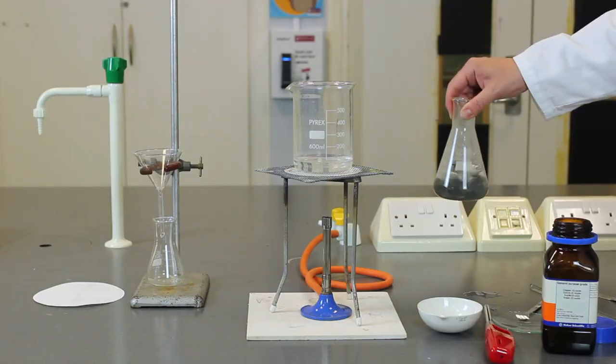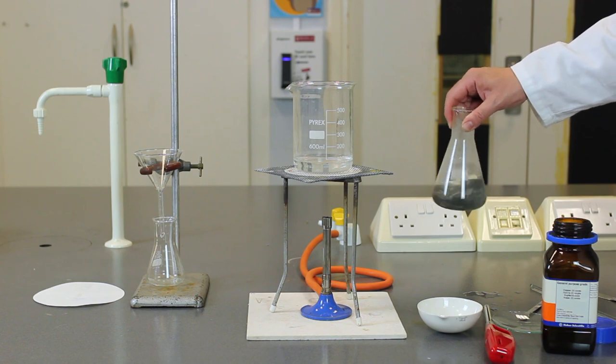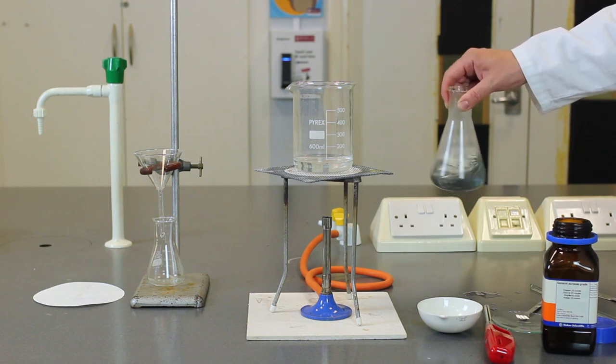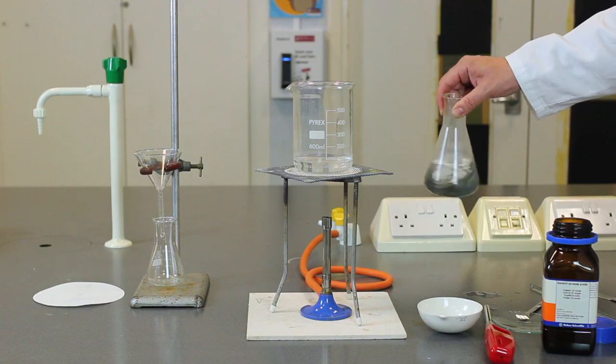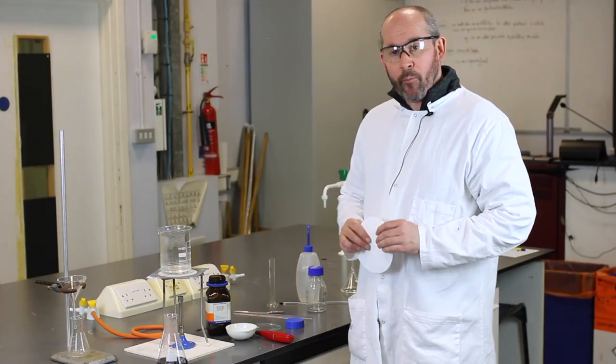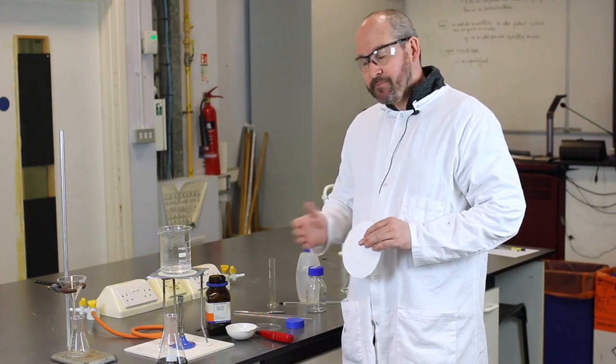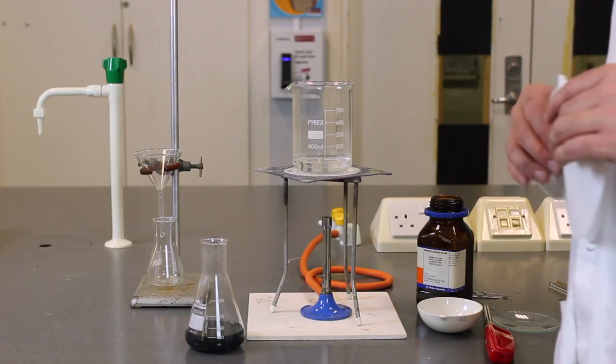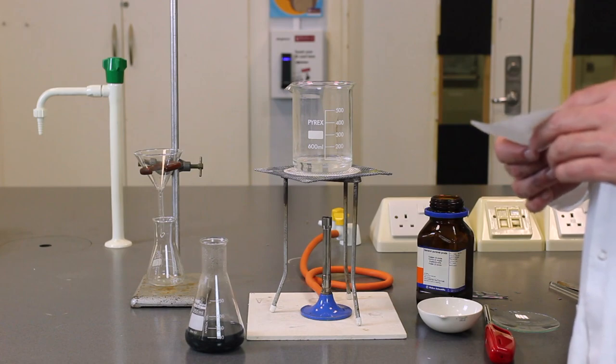It's a sort of bluey-grey colour. But the grey colour is obviously due in part to the presence of the black copper oxide that we've added. So at this stage we know that the copper oxide is in excess because it's no longer dissolving. And you can see that from the black colouration of the mixture.